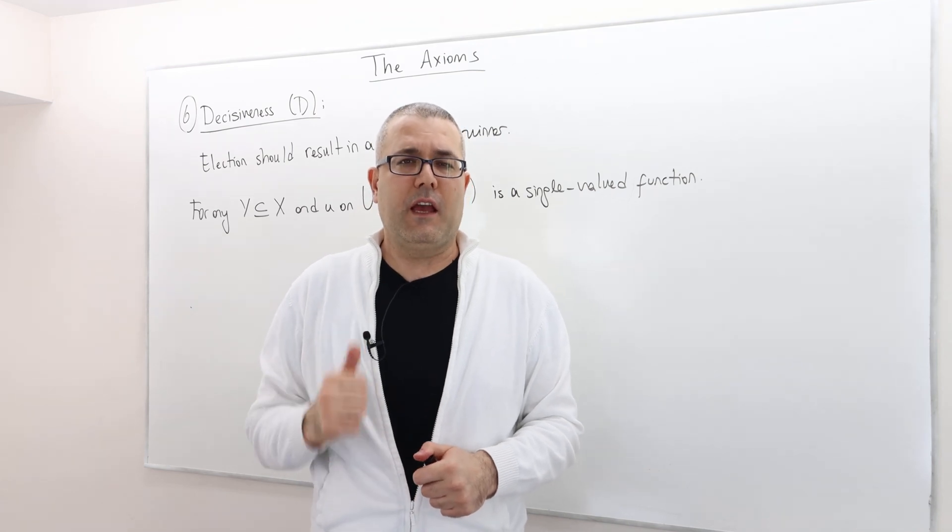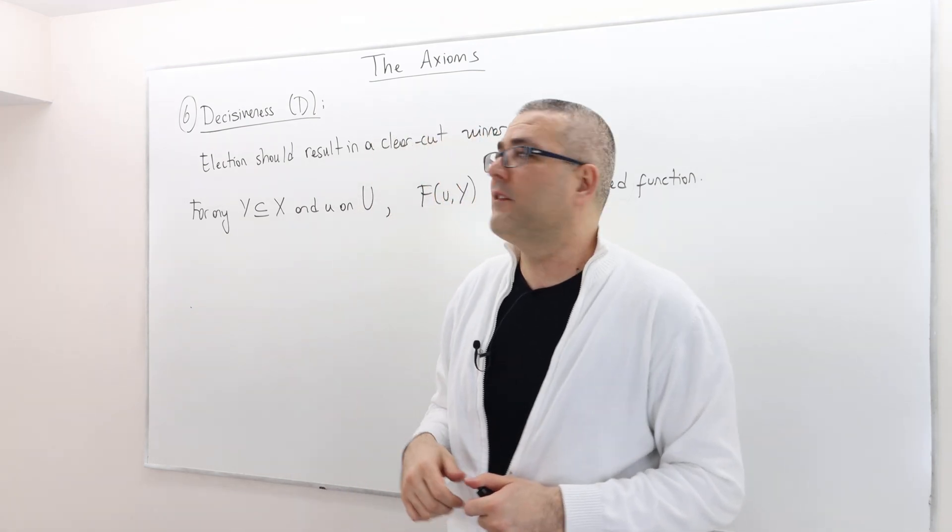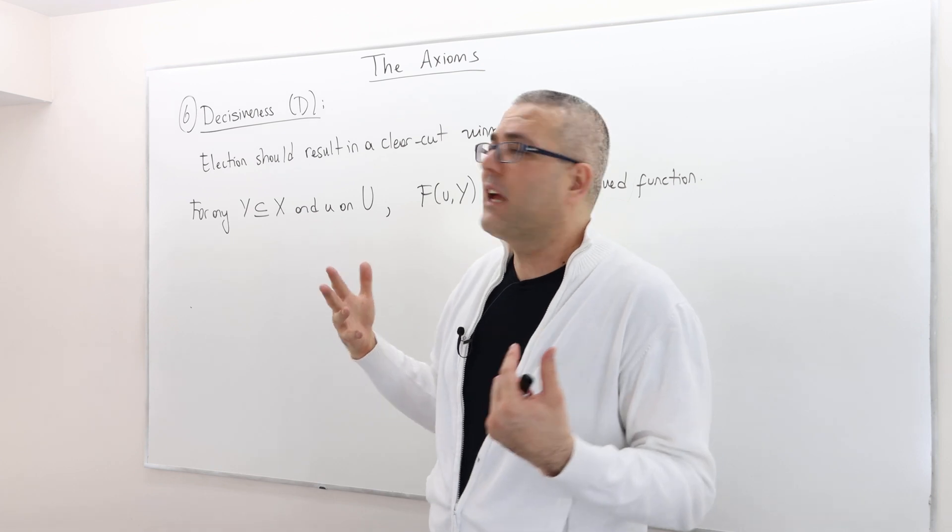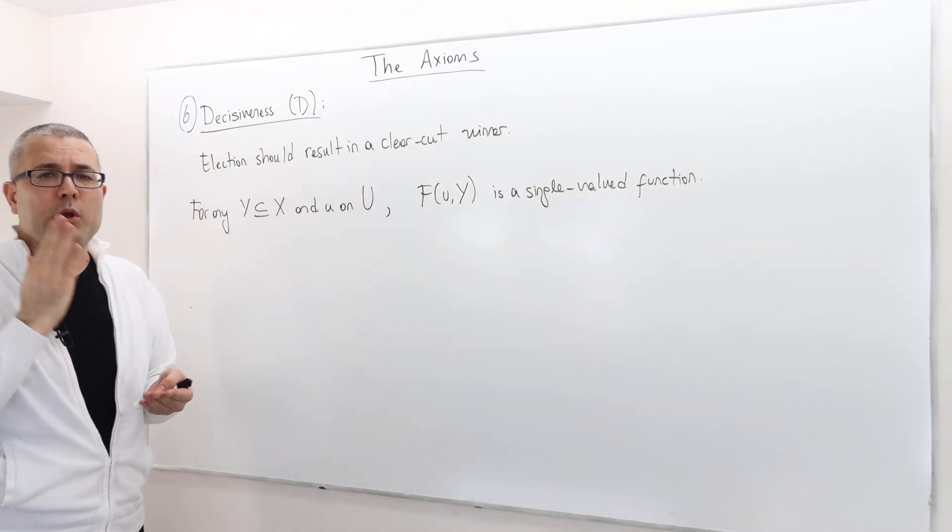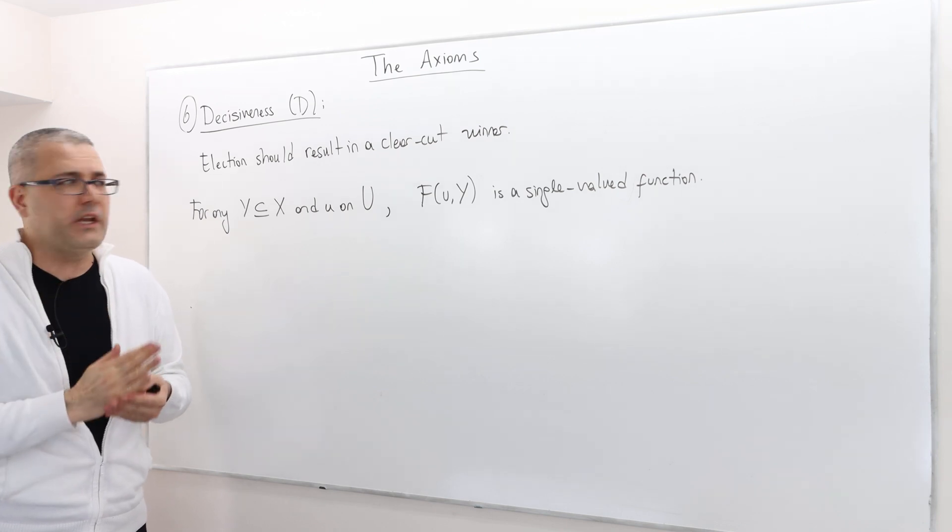This is our last axiom, which is called decisiveness. It's simple: an election should result in a clear-cut winner. There should be one and only one winner.